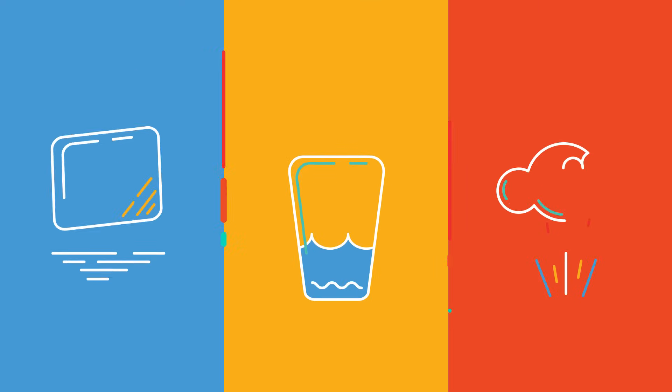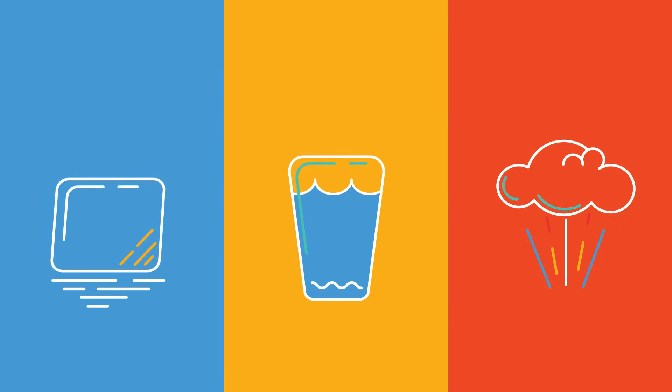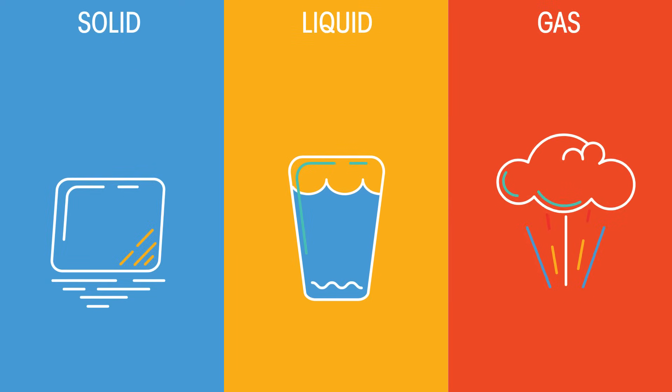On Earth, materials exist in one of three main states of matter – solid, liquid or gas. Materials can change between these states.